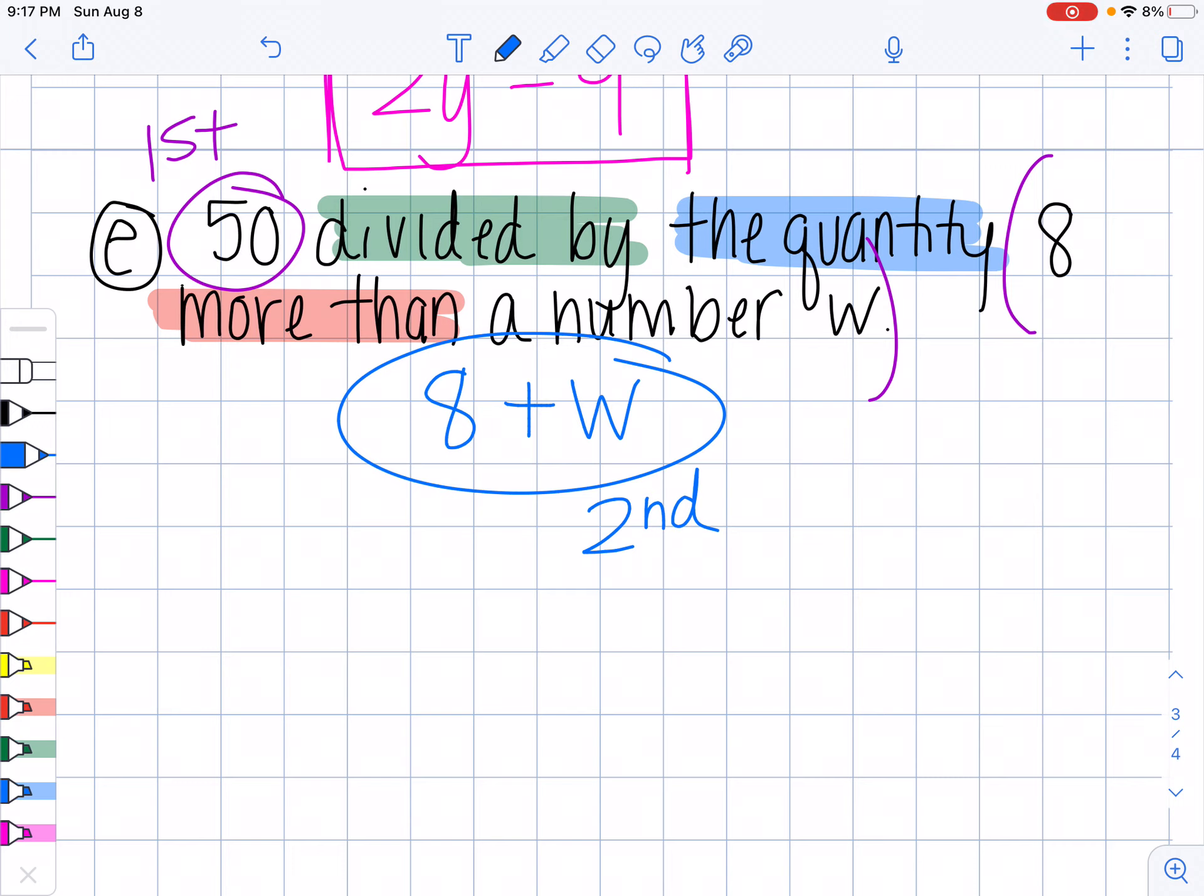This is my second part. So what I'm dividing is my first, 50, divided by my second part, eight plus W. I know it can be a little bit tricky to kind of decode when there's more than one keyword happening. So in this one, we had three. We had divided by, the quantity, and more than.